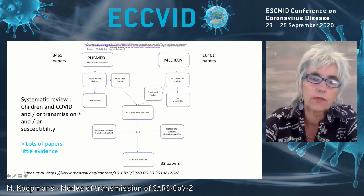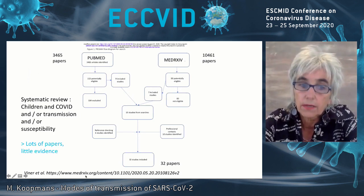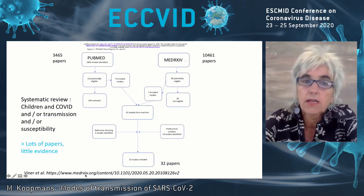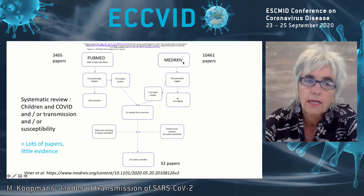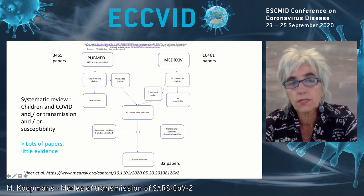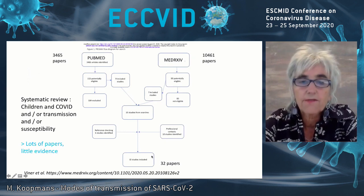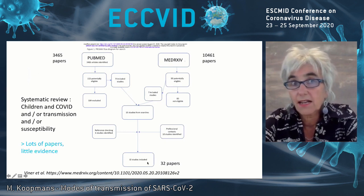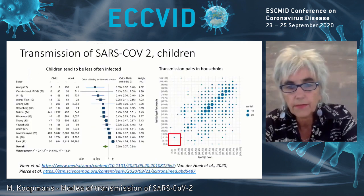Let's go back to children. Here's an interesting systematic review — still in preprint — that has done a heroic job going through all papers published and online, asking: what is the evidence of children and transmission, or children and susceptibility? The first conclusion is that out of 1,400 papers, very few really provide data that allow you to look into this question. So lots of papers, little evidence.